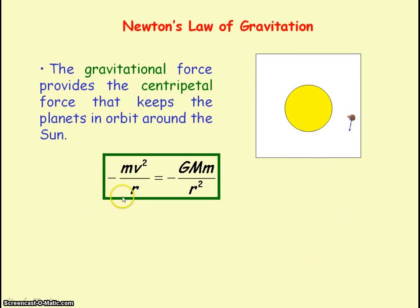So the centripetal force is equal to mv squared divided by r, where m is the mass of the planet, v is the average speed of the planet, and r is the orbital radius, that is the distance between the centre of masses of the sun and the planet.